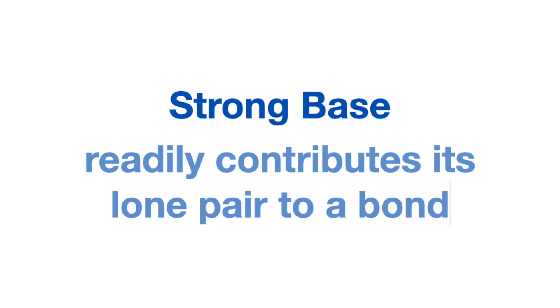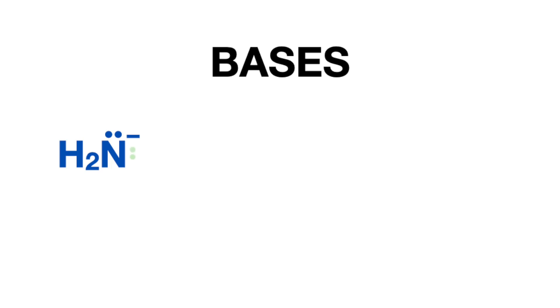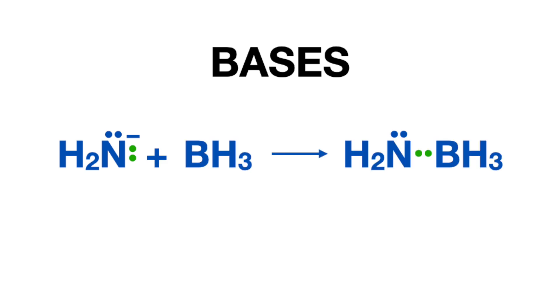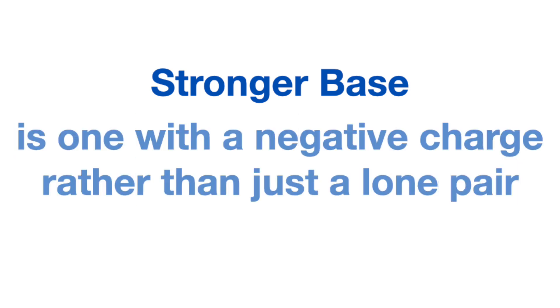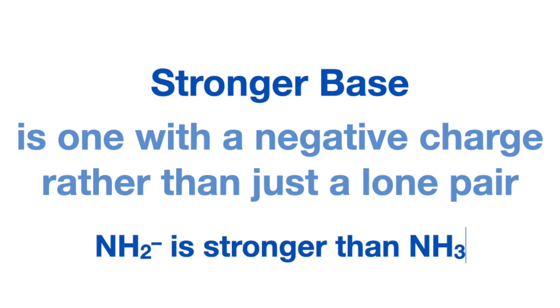A Lewis base is one that readily contributes its lone pair to forming a bond with an acid. A Lewis base can also be a negatively charged compound, which simply means it has an extra lone pair to contribute to forming a bond with a Lewis acid. A stronger base is one that has a negative charge rather than just a lone pair — for example, a negatively charged amine is stronger than ammonia. So now let's talk about how to easily identify strong bases.